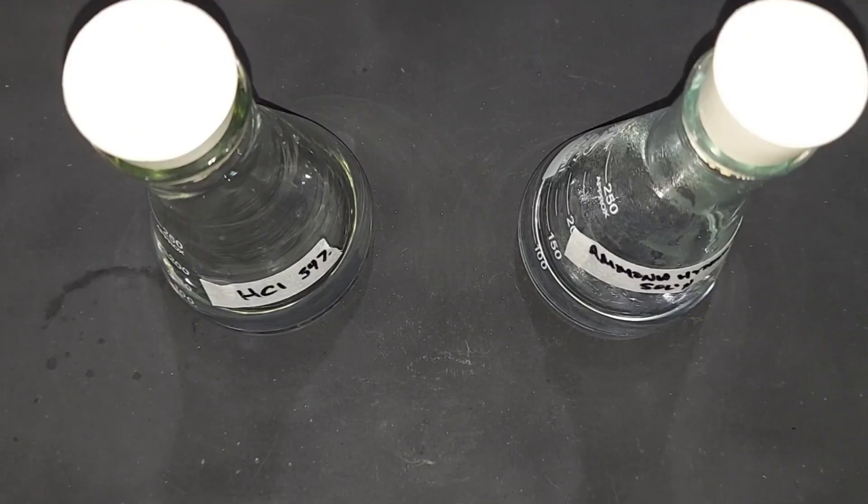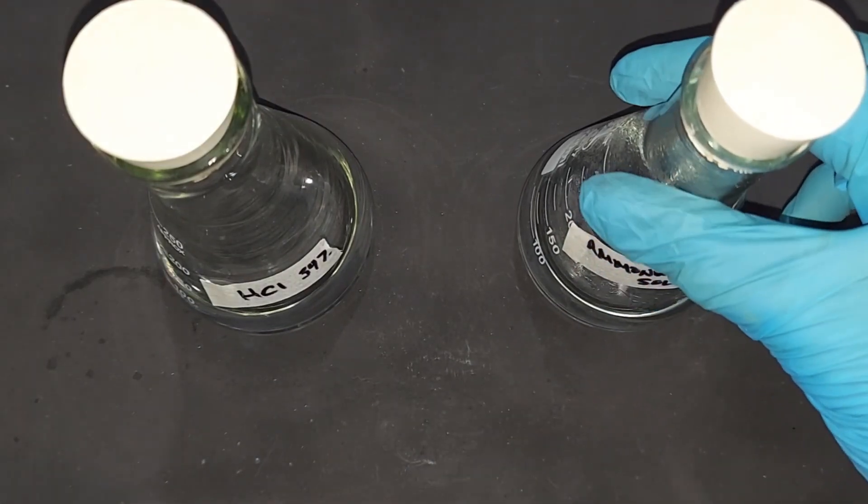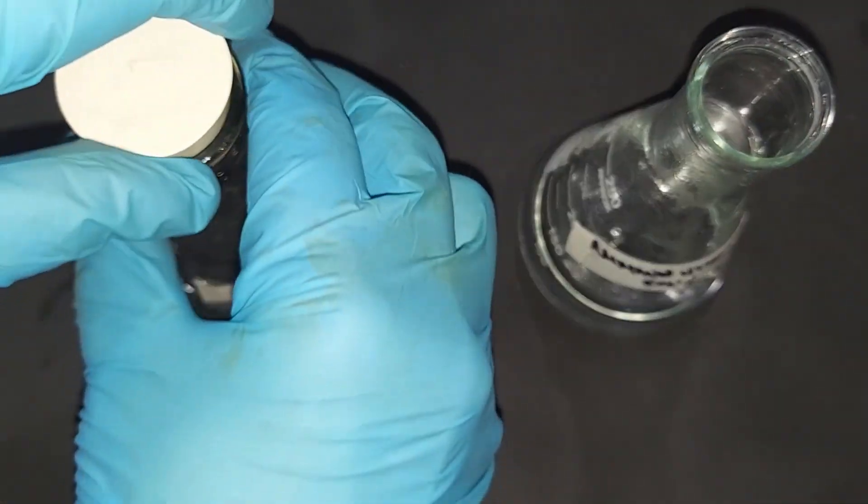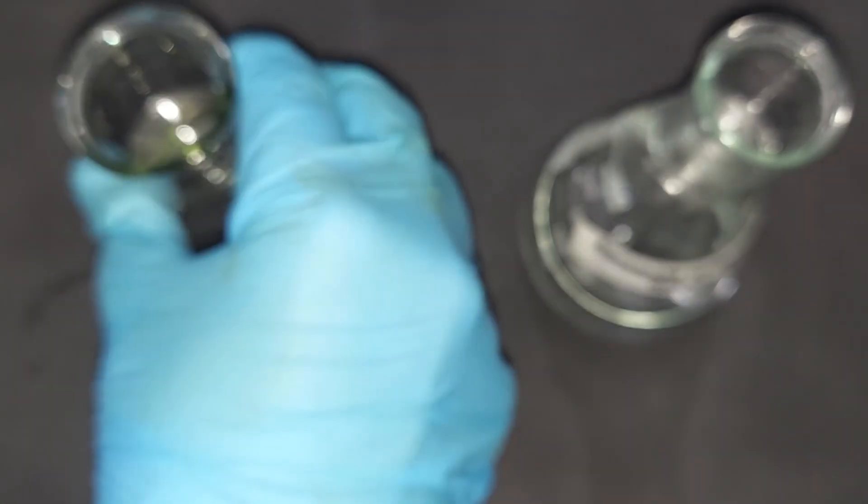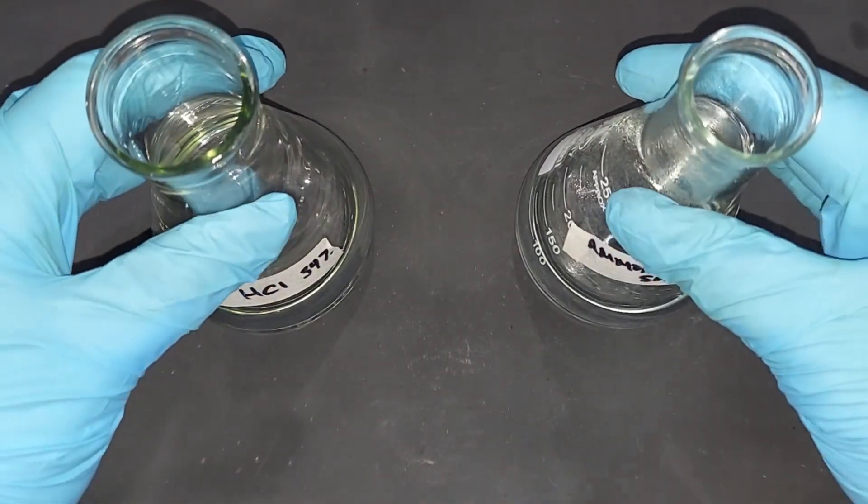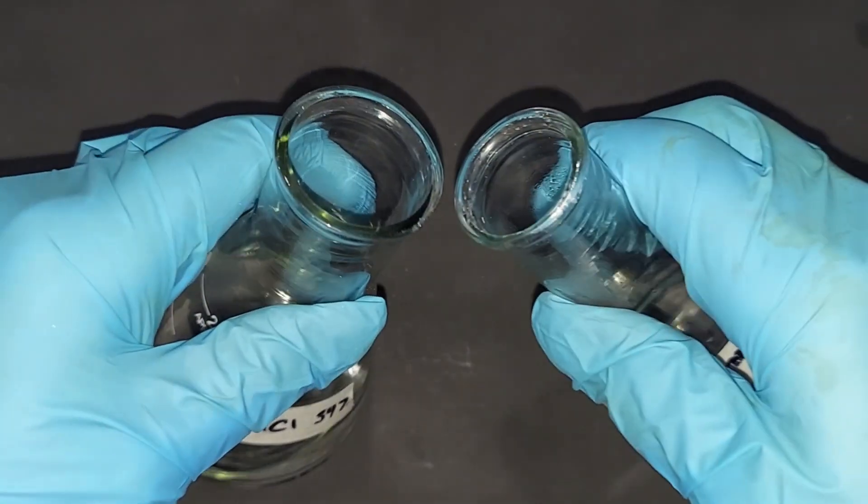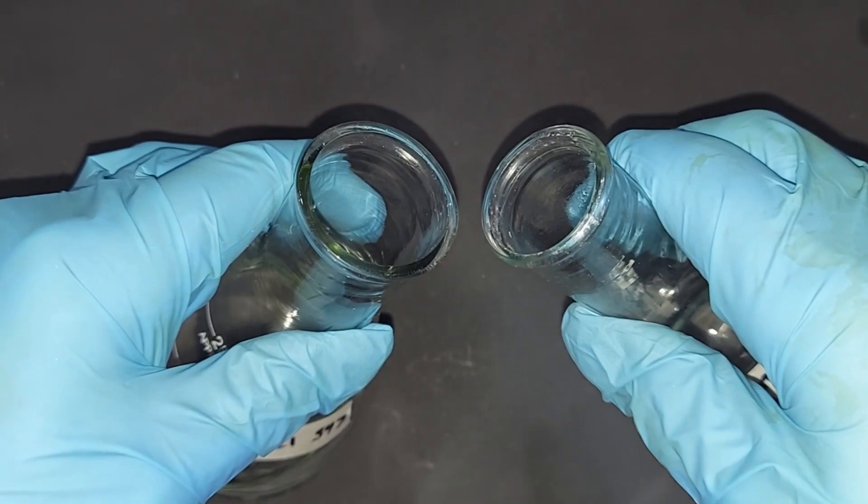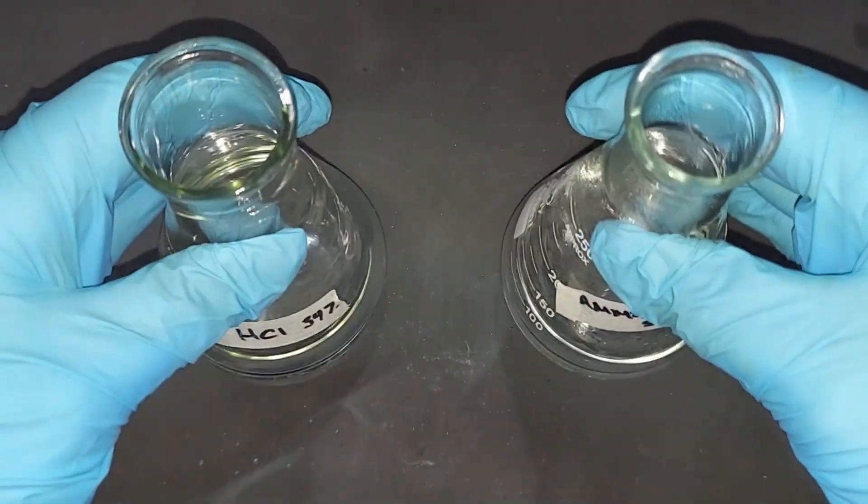The other simple test we can do is take the ammonia hydroxide solution we made and some hydrochloric acid, this happens to be 34 percent. The fumes from both of them when mixed will produce ammonium chloride which is a gas and shows up as white smoke. And you can clearly see that being made. Nice.